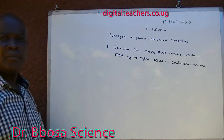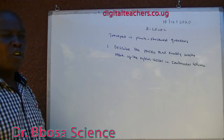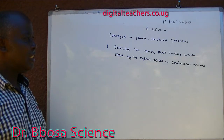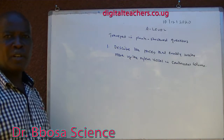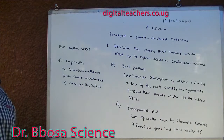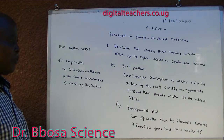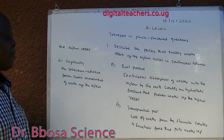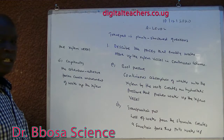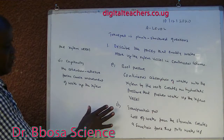Number one: describe the forces that enable water to move up xylem vessels in a continuous column. You can pause and answer. A, root pressure: continuous absorption of water into the xylem by roots creates hydrostatic pressure that pushes water up the xylem.